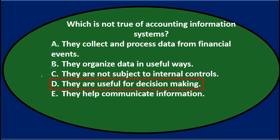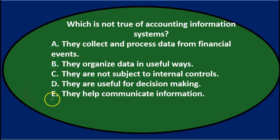D: They are useful for decision making. Accounting information systems are useful for decision making — I would think they help in the process of making a decision, so that sounds true. E: They help communicate information. Accounting is kind of a language of business, so they probably do help communicate information.